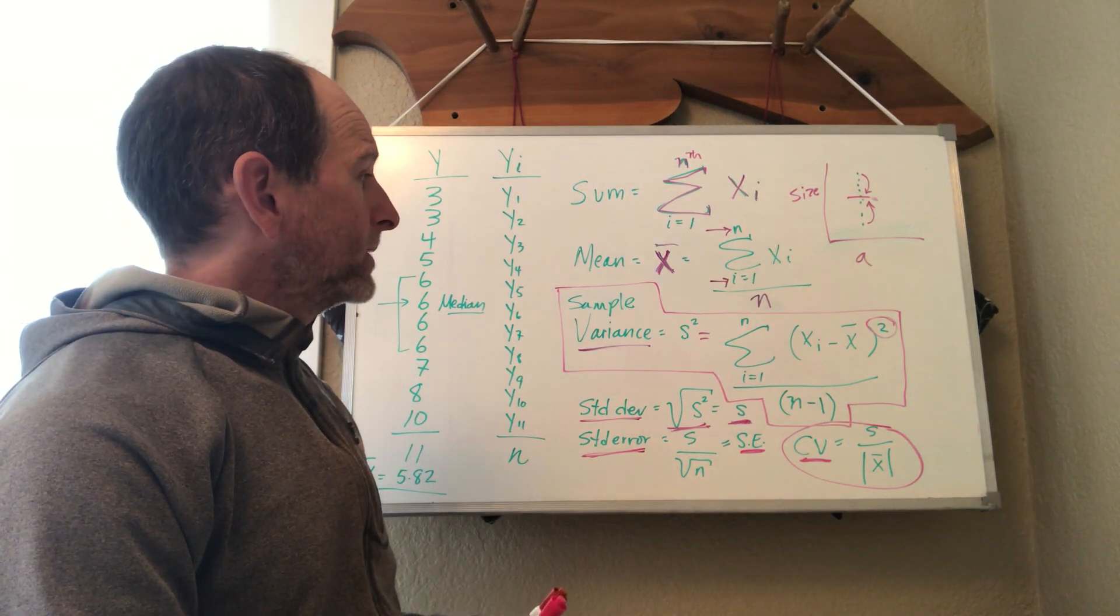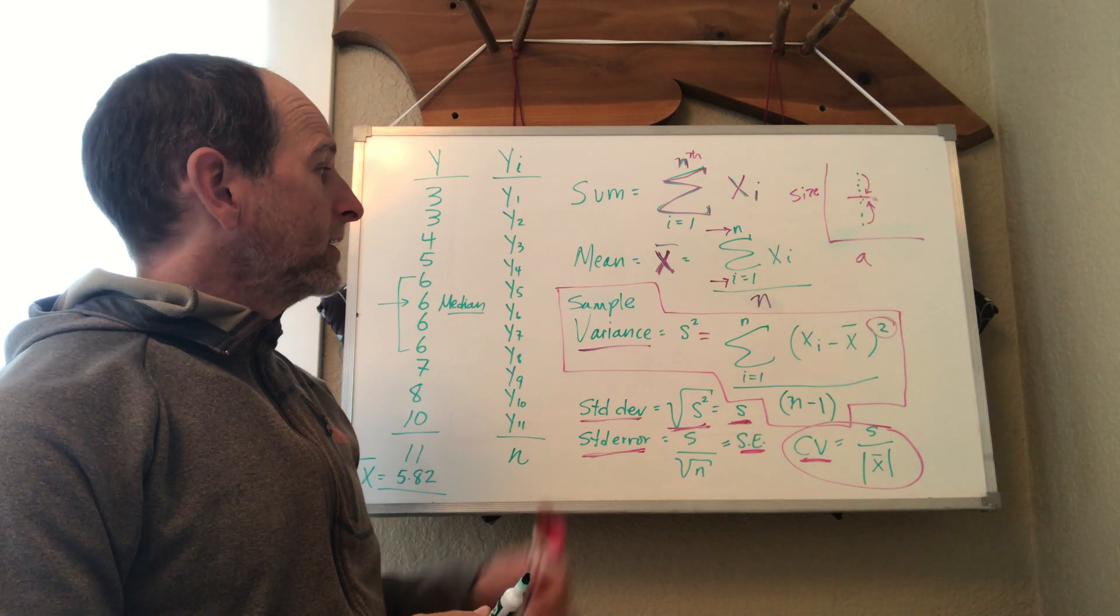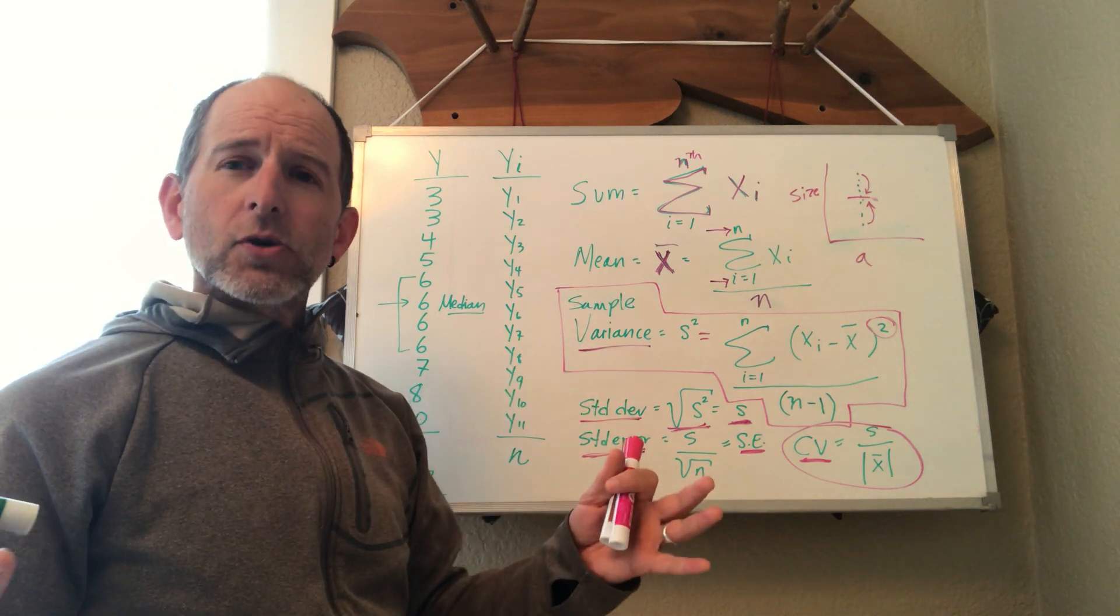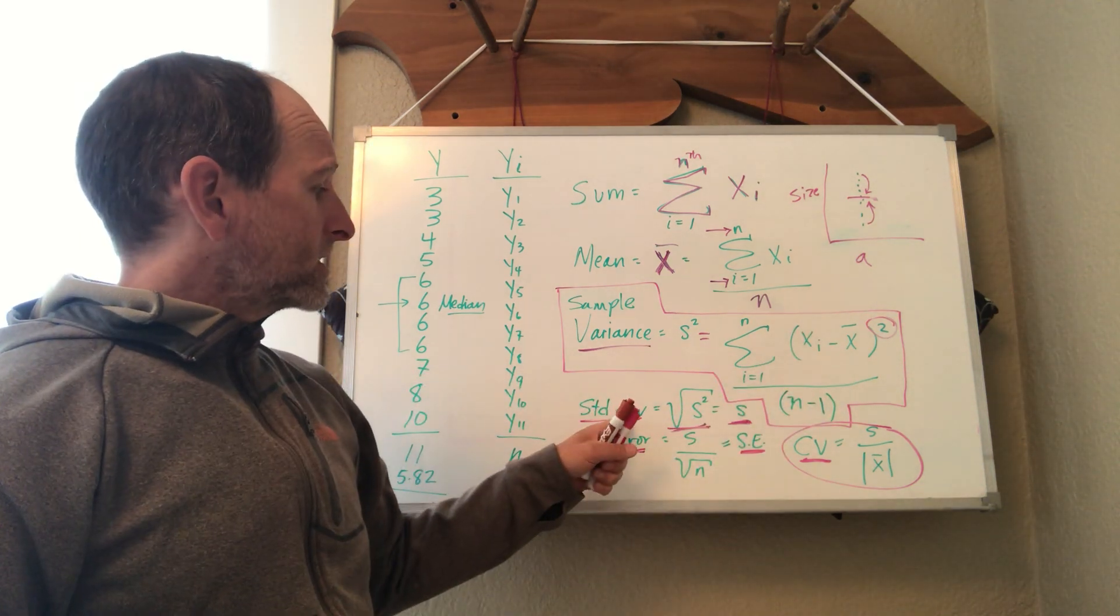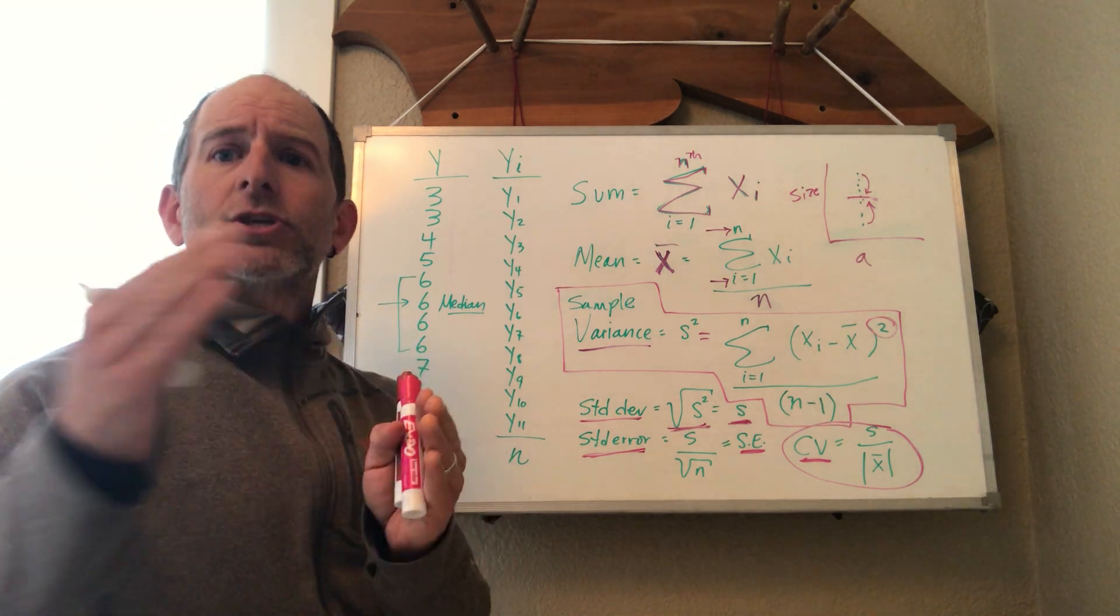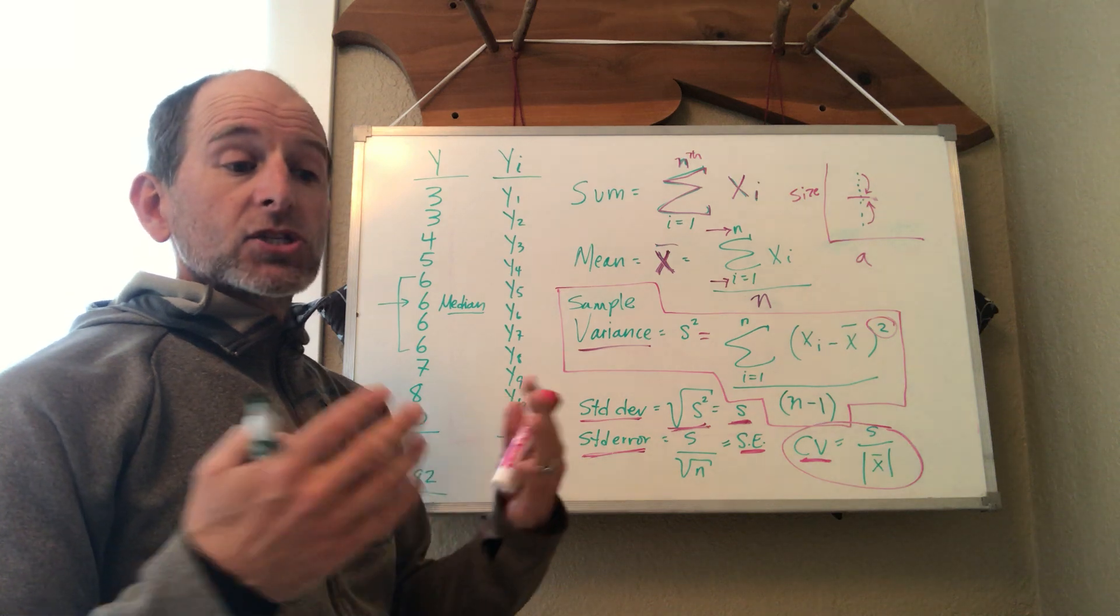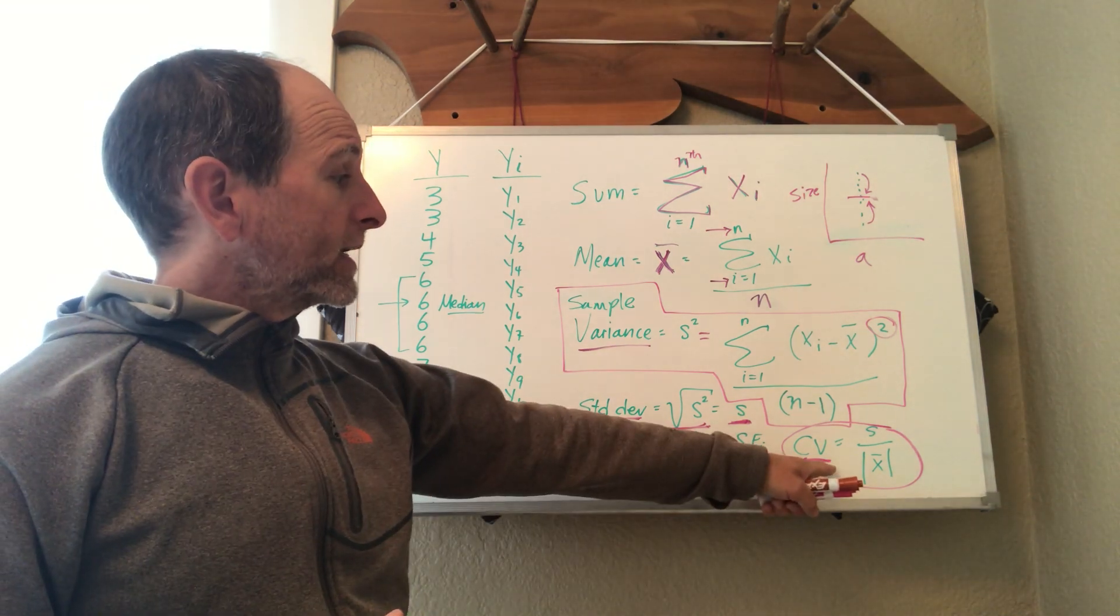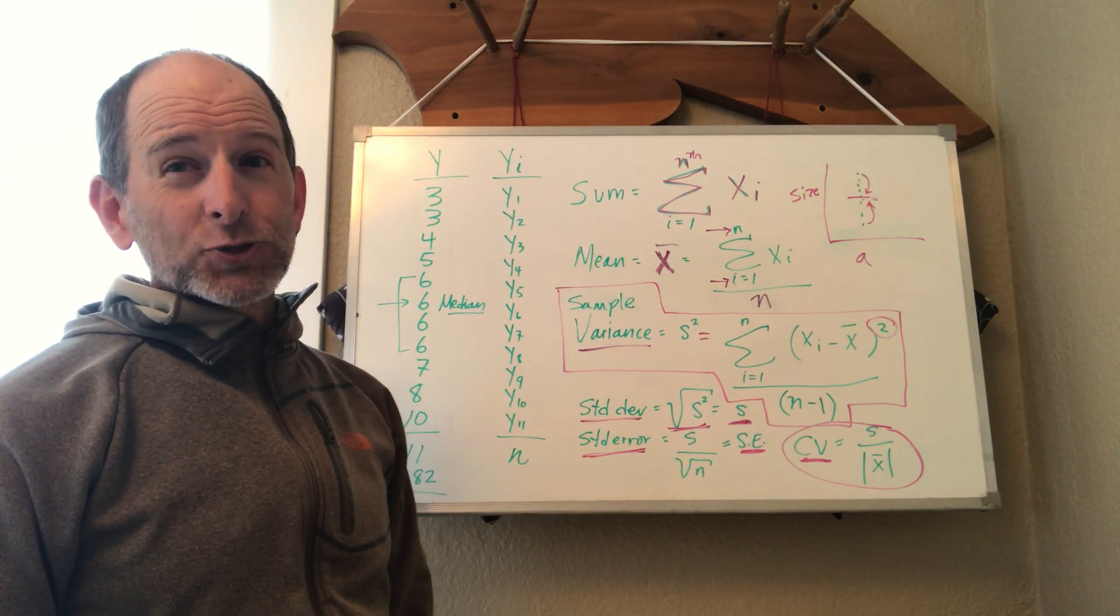So all of these are important measurements of variation in your sample. But there are a few that are really key. Variance is really important because it's going to take us to the next level when it comes to understanding other things that are going on in our population and whether they occur due to chance or not. Really important equation. Standard deviation is really important because as a single measure, that's the best measure of the average variation of an individual point from its mean. And standard error is really important because it's a small number. It's commonly represented as a measure of variability in graphs. Coefficient of variation tells you about how much standard deviation you have relative to the size of the mean you're measuring.